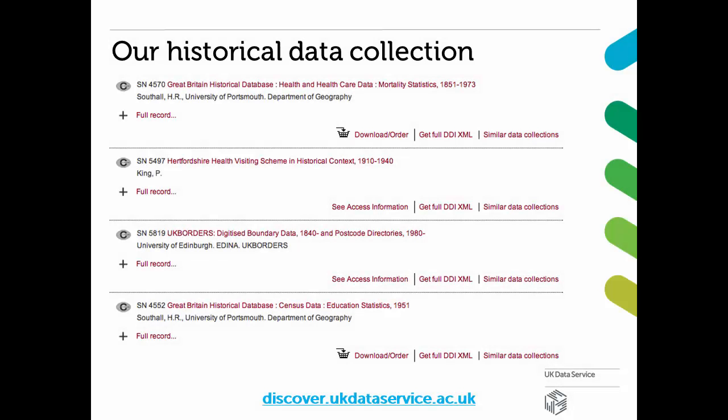The UK Data Service hosts around 700 different data collections dating from before the 1960s, mainly from Great Britain and Ireland and their territorial subdivisions, but also international data. If possible, we also give advice where to find data on topics which our collections do not cover.